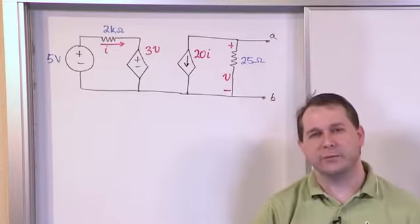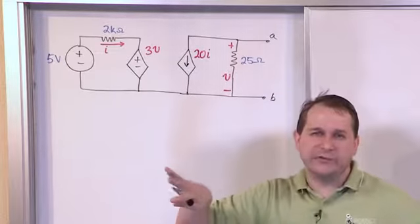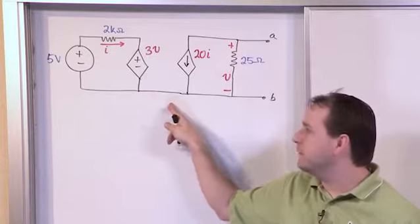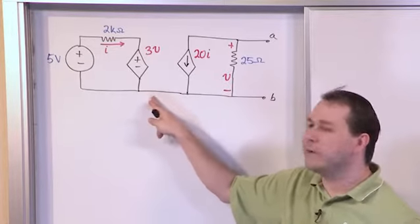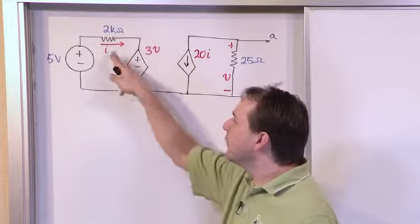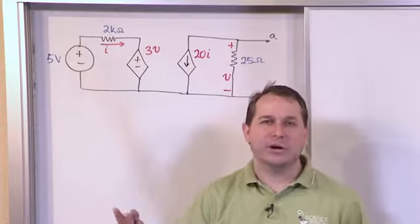Well the first thing you need to realize when you see anything like this with a single line connecting two parts of a circuit is there's never any current flowing between these two parts here. There's never any current in here. And when you think about it, there can't be, because if any current flows out of this circuit over here, then there would be no way for it to come back.